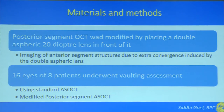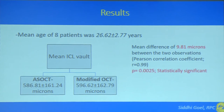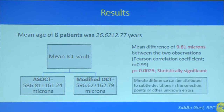16 eyes of 8 patients underwent vaulting assessment using the standard ASOCT as well as the modified posterior segment OCT. The mean age of the 8 patients included in our study was 26 years. The mean ICL vault on ASOCT was 586 microns, whereas on the modified OCT it was 596 microns, resulting in a mean difference of 9.8 microns which was statistically significant. However, this minute difference could be attributed to subtle deviations in selection points or other unknown errors.